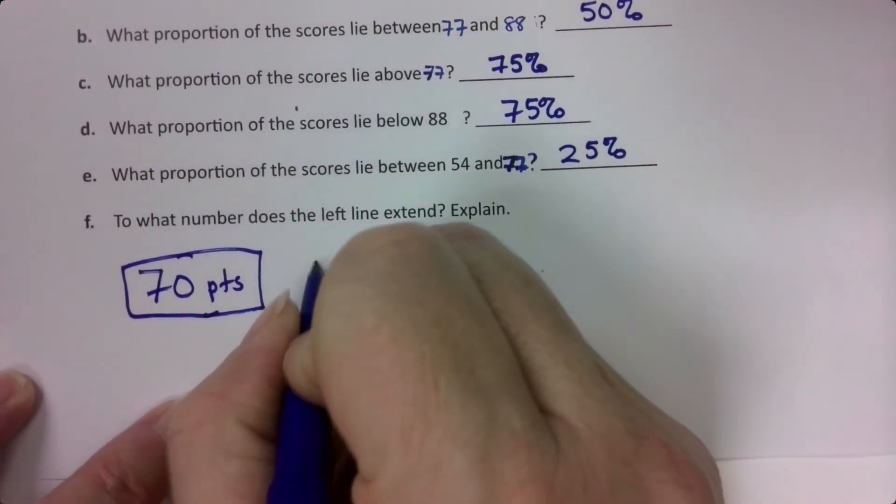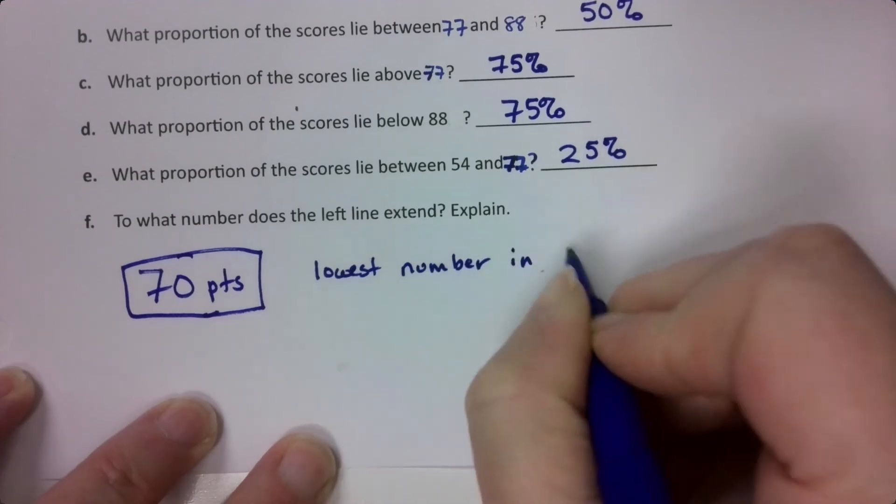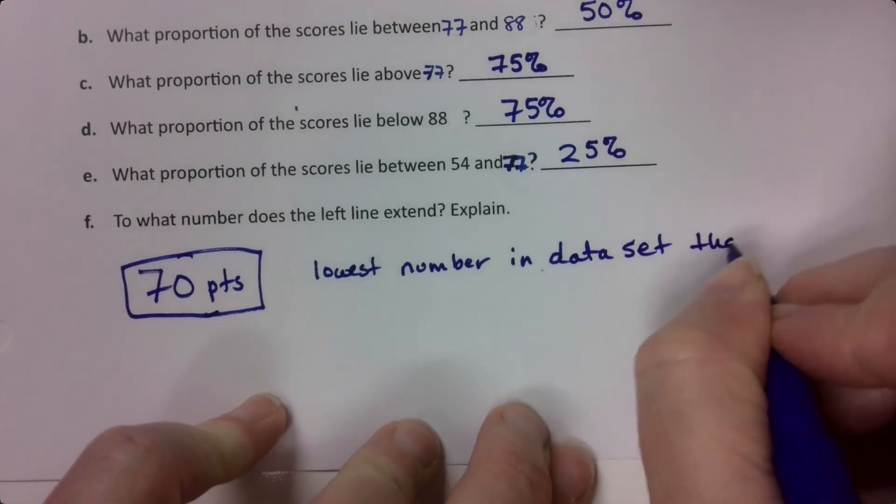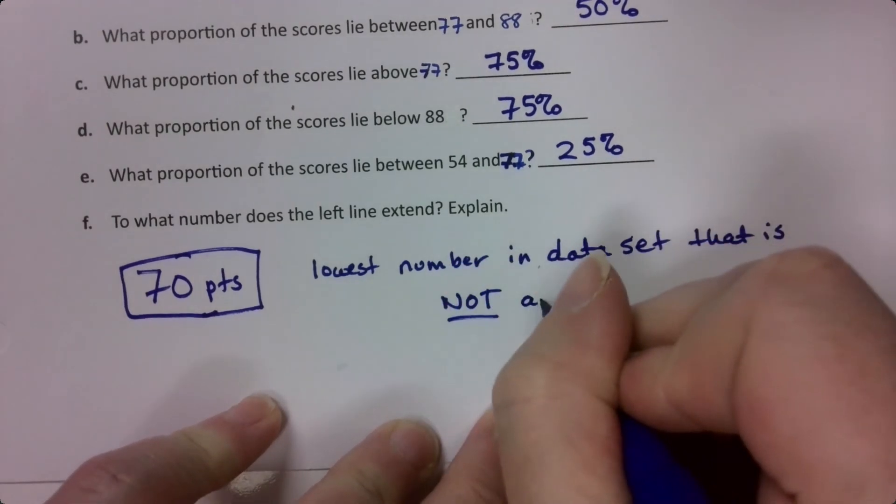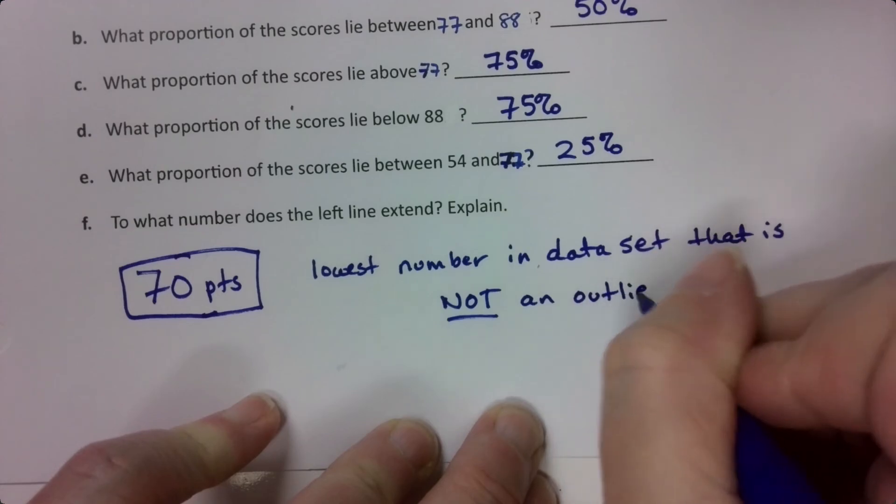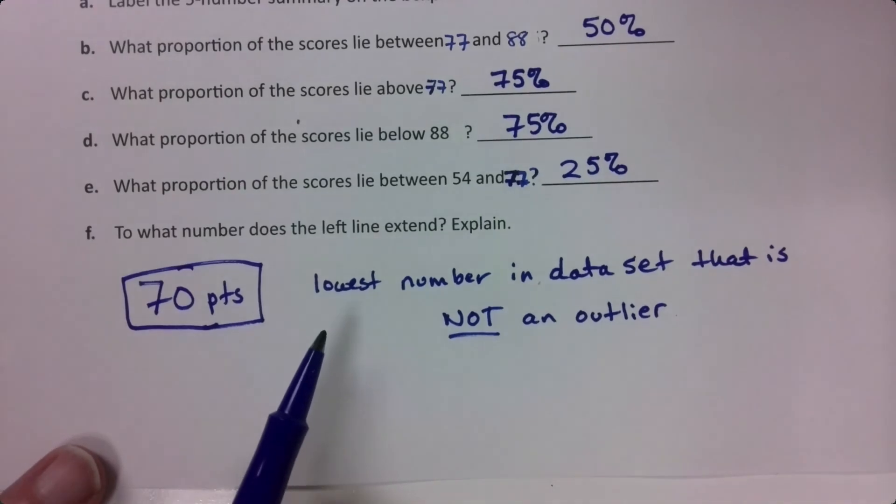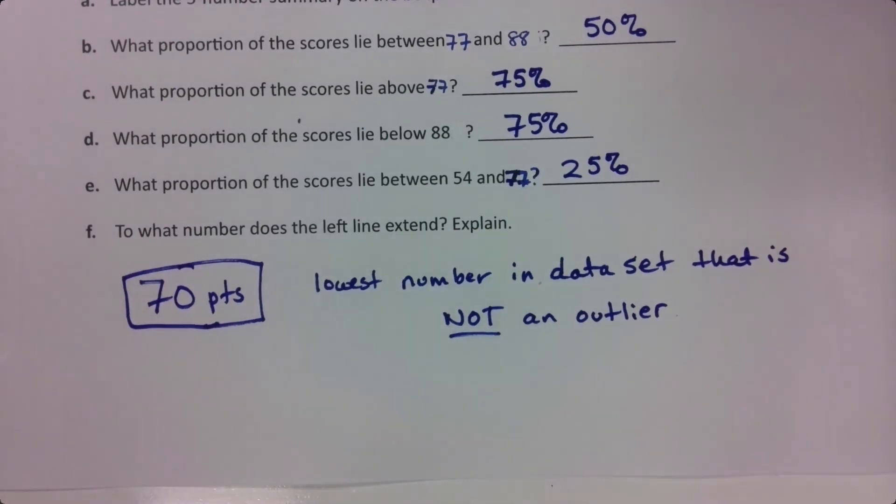Therefore that line goes to the next number that's in the data set that's not an outlier. So it's the lowest in the data set that is not an outlier. 60 is an outlier, therefore it doesn't go all the way to 60. It goes to 70 because that's the next number in the data set that is not an outlier.